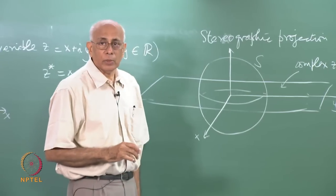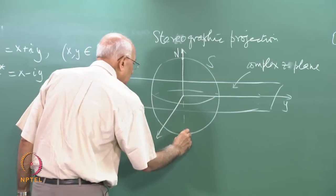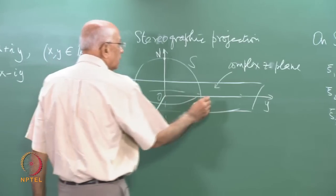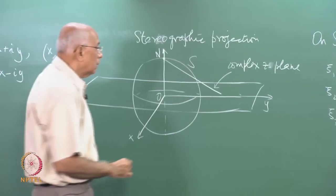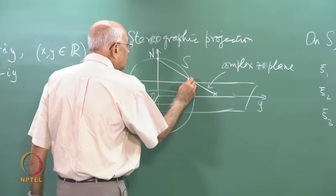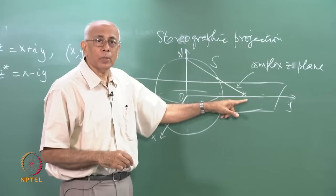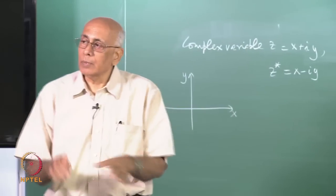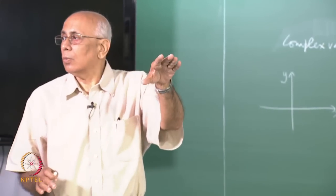The idea of stereographic projection is that you take the north pole and draw a line to any point on the complex plane. This line intersects the sphere at one point, and you associate that point on the sphere with the corresponding point in the complex plane. This gives a mapping from the complex plane to the surface of the sphere, since for every point in the plane there exists one point on the sphere.